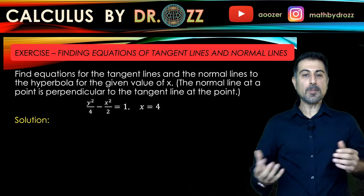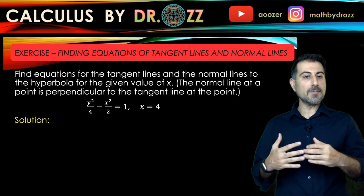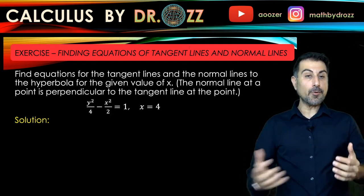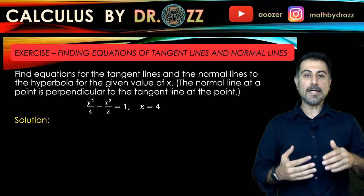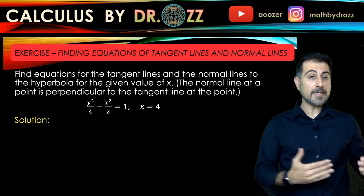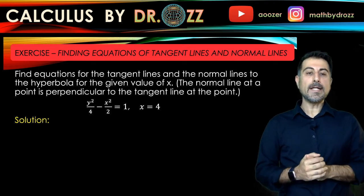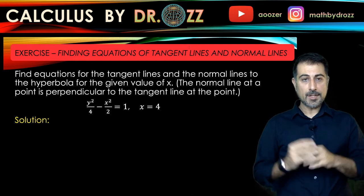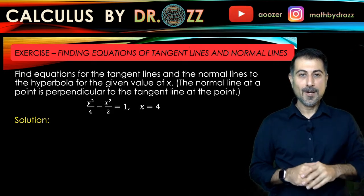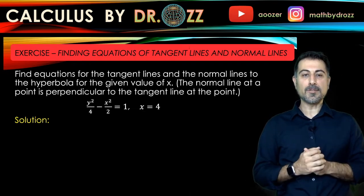We're given a point and the equation of the hyperbola. Finding the equation of a tangent line to a curve at a point is a very standard calculus problem. What is new here is the equation of the normal line. The normal line at a point is a line which is perpendicular to the tangent line at that point. So once you know the tangent line, you find another line perpendicular to it. There's a relationship between the slopes of perpendicular lines — start thinking about how those slopes are related to each other.